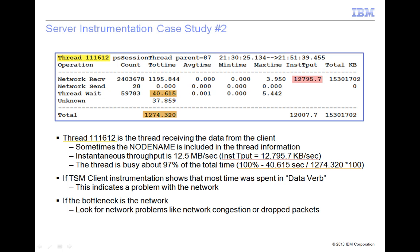This is slower than would be expected on a 1 gigabit per second Ethernet. Also, we can see that the thread is waiting only 40.615 seconds. This means that the thread is busy about 97% of the total time. So we can conclude that this network receive thread is the bottleneck.